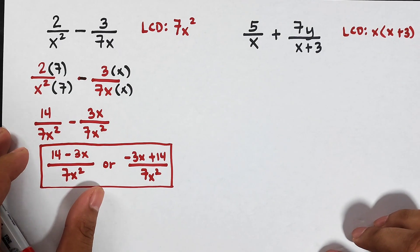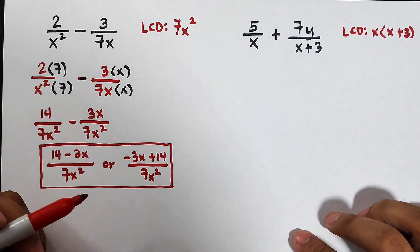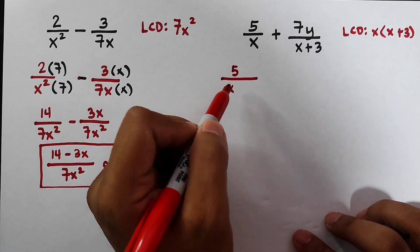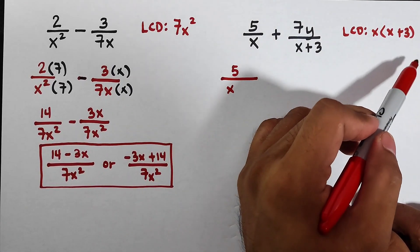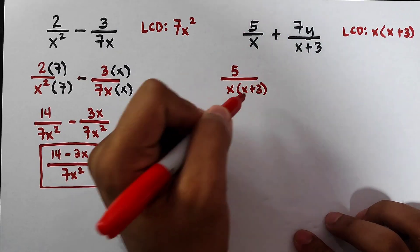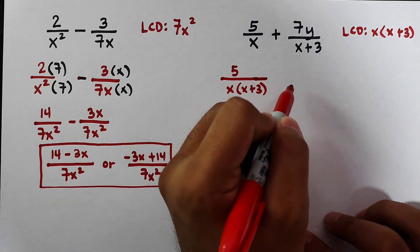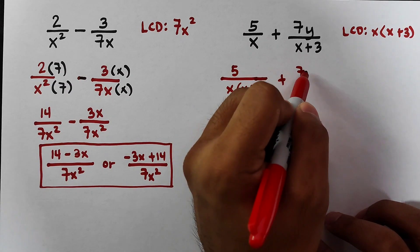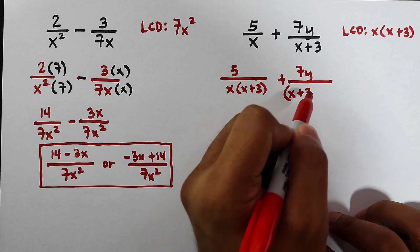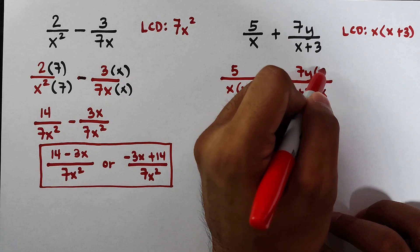The LCD is x times x plus 3. Now applying the same method: for 5 over x, we think of what to multiply by x to make it x times x plus 3 — that would be x plus 3. And for 7y over x plus 3, what do we multiply by x plus 3 to make it x times x plus 3? That is x, so we multiply both the denominator and numerator by x.